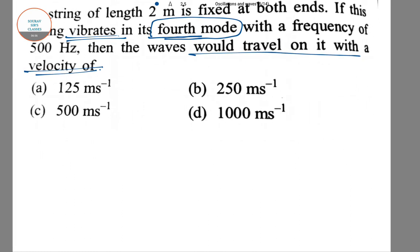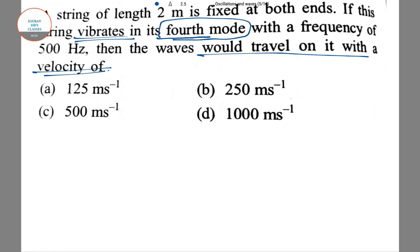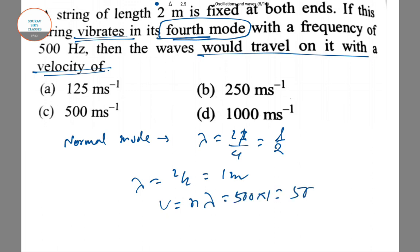Using the formula for normal mode, λ = 2L/4 = L/2 = 1 meter. Now the velocity of waves v = Nλ = 500 × 1 = 500 m/s. So the answer is C. In the next video, I will tell you about more questions.